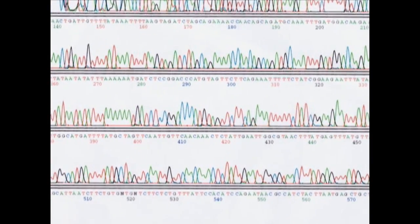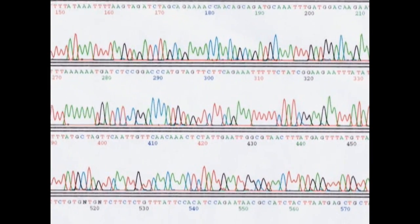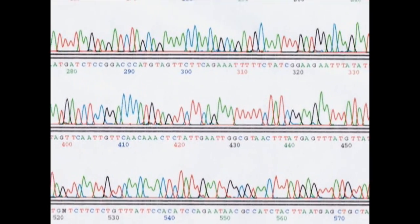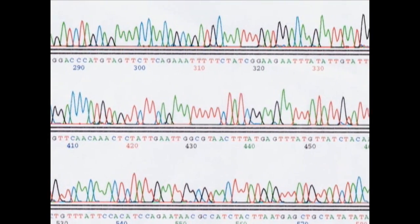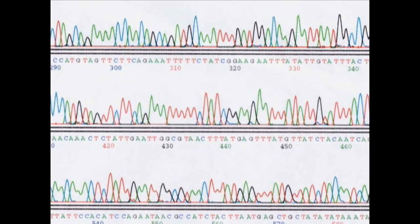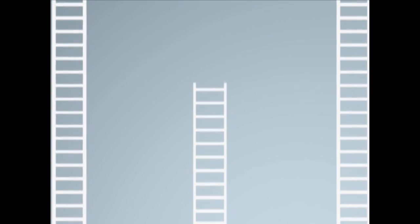What's commonly known as DNA fingerprinting is a comparison of the polymorphic DNA found in two samples. Polymorphic regions of the chromosome are those that vary widely between individuals. They fall into two categories: short tandem repeats, or STRs, and variable number tandem repeats, or VNTRs.